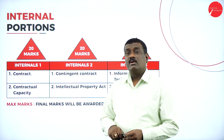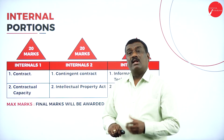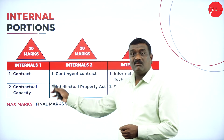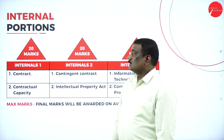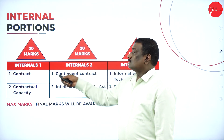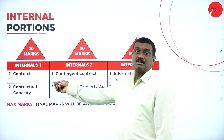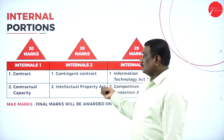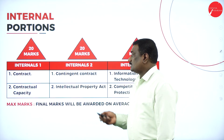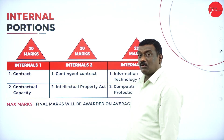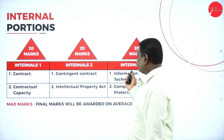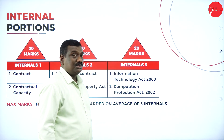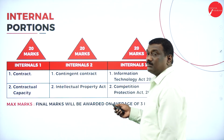Coming to the internals: you have internals for 20 marks, while the written exam is for 80 marks. The internals are divided into three parts — Internal 1, Internal 2, and Internal 3. For Internal 1, two chapters are covered: Contract and Contractual Capacity. For Internal 2: Contingent Contract and Intellectual Property Act. For Internal 3: Information Technology Act 2000 and Competition Protection Act 2002.